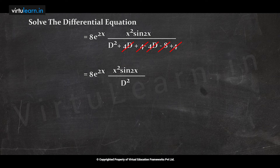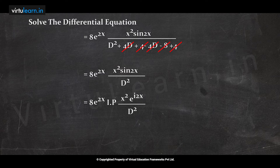Now solve x²sin(2x) using the imaginary part method. Since sine(2x) appears, write it as the imaginary part of e^(i2x). If cos(2x) appeared, you would take the real part. So sine(2x) is replaced by Im[e^(i2x)], giving Im[1/D² · e^(i2x) · x²].